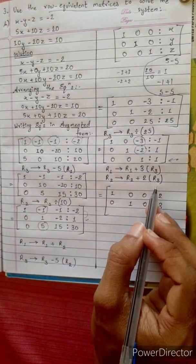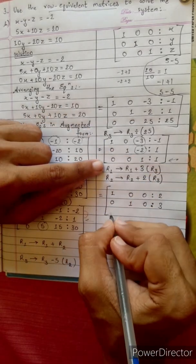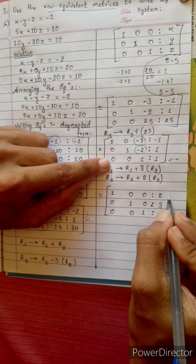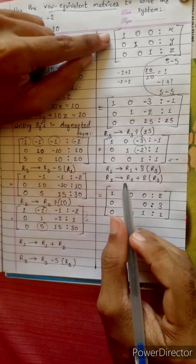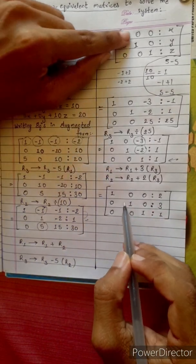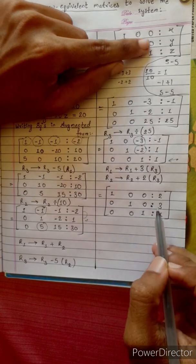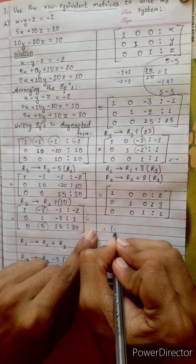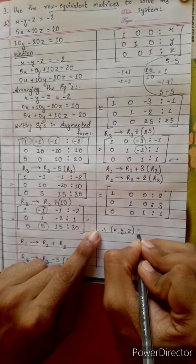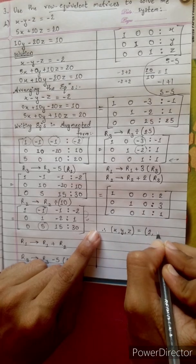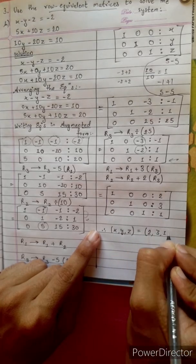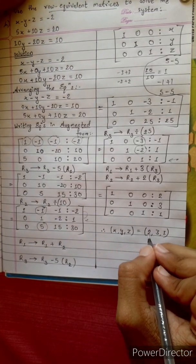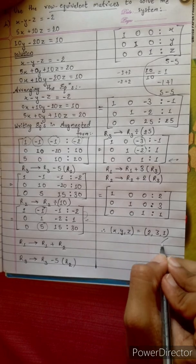The final augmented matrix is the identity matrix: [1, 0, 0 | 2], [0, 1, 0 | 3], [0, 0, 1 | 1]. Therefore x, y, z equals 2, 3, 1. Let's check the answer — that's the right answer.